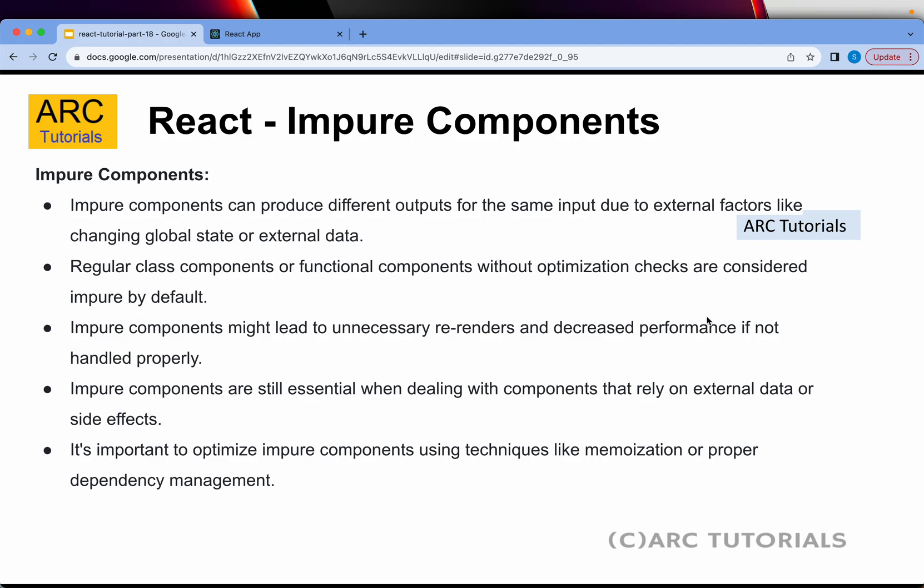For impure components, optimization techniques like caching won't happen automatically in the background, so we need to optimize them manually. At the end of the day it's about memory usage and performance. Impure components may cause excessive re-rendering, which can slow down the application.